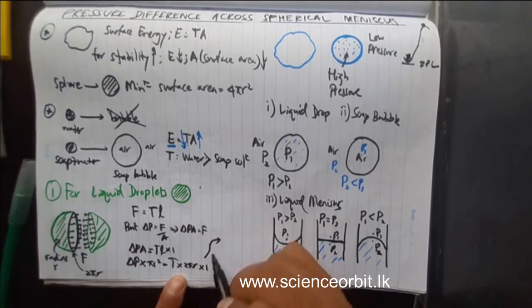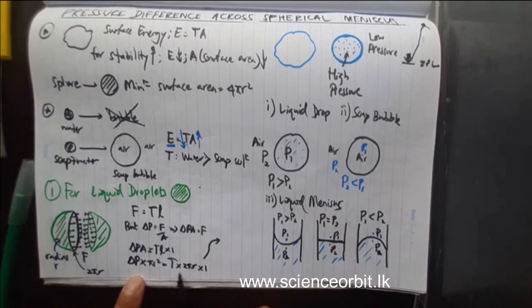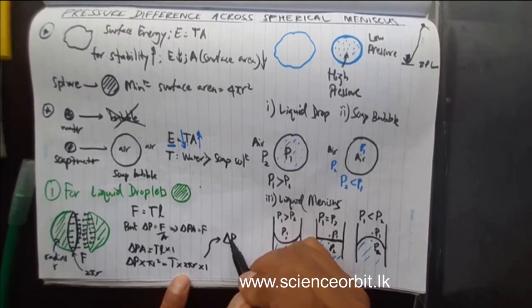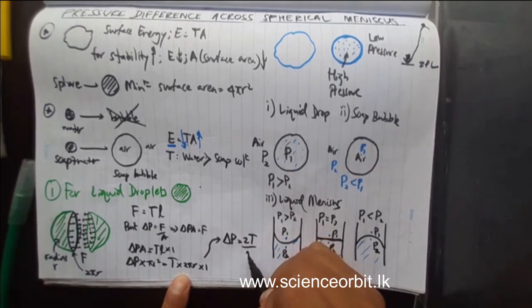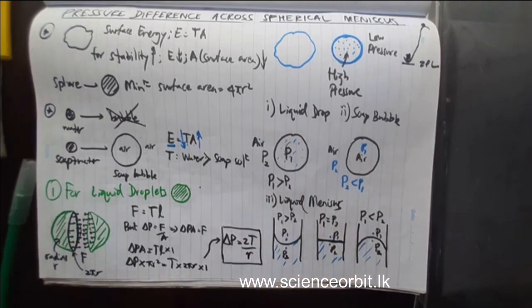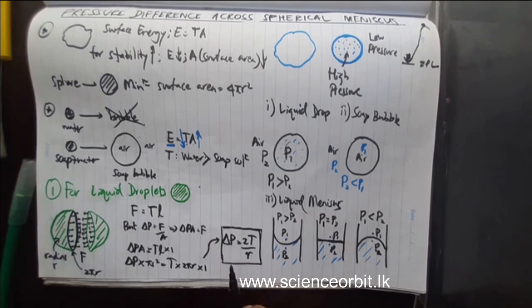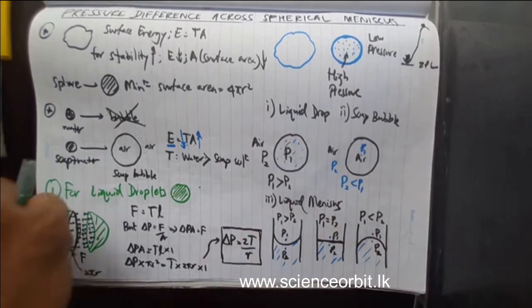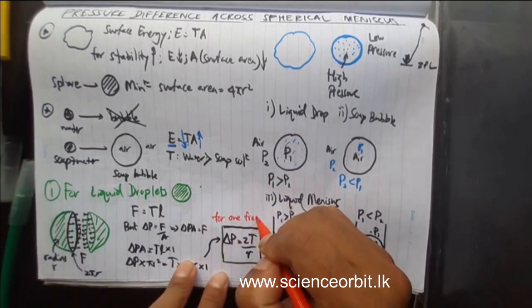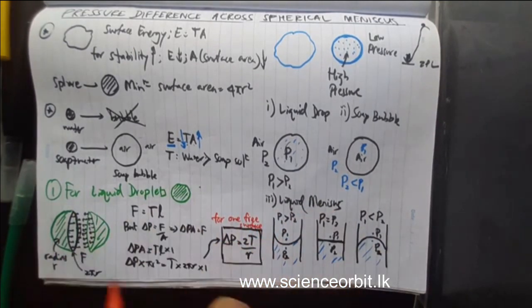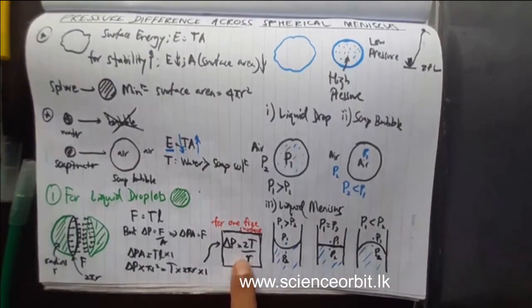This is a very important equation. This is one of the last equations we are going to learn — there are maybe two more and then the lesson will be done. This is the equation for the pressure difference created across a spherical meniscus or spherical liquid surface, but there should be only one free surface. Keep that in mind. I have explained how the equation was derived; sometimes you might have to derive that in exams, but at least try to remember this equation — you will need it quite frequently.